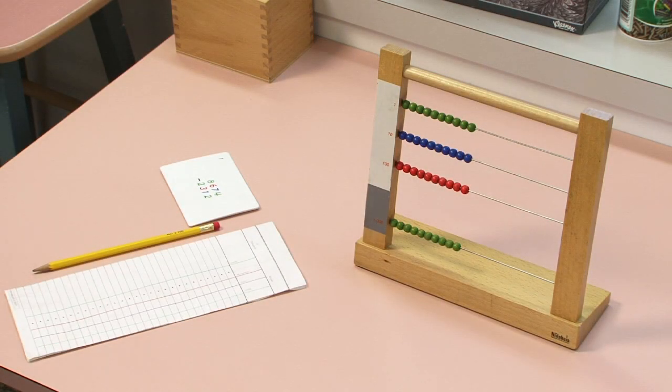We have done a lot of work on the small bead frame. We've worked on four digit addition and you're doing very well. So I think it's time to show you something else that can be done on the small bead frame. Today what I'd like to show you is four digit subtraction.